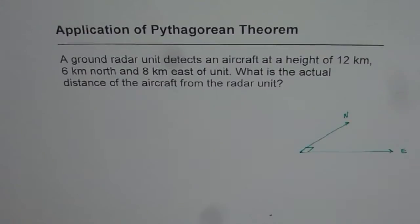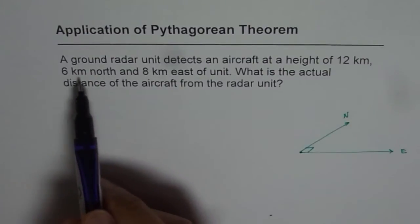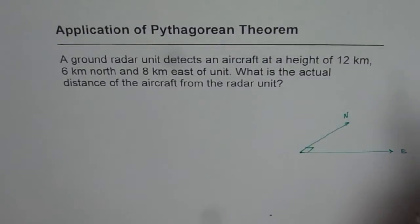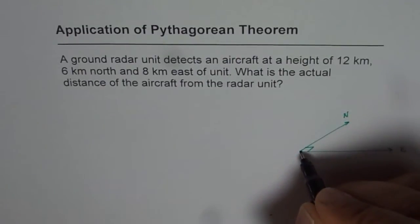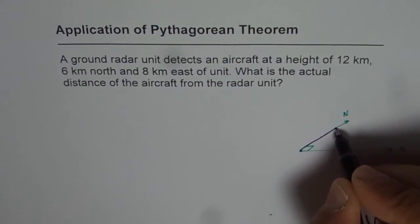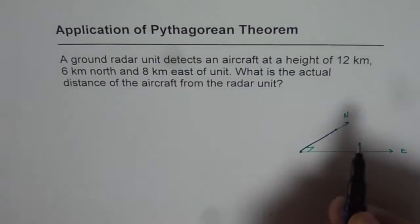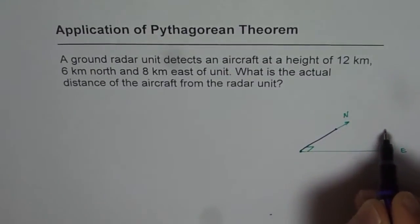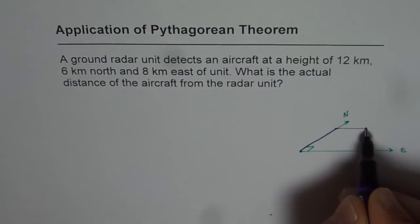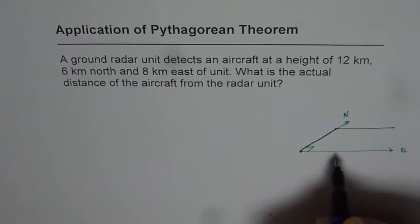Now when we are saying that it is 6 km north and 8 km east, let us say the distance here, this is 6 km and then that is north and 8 km east will be like this, let us say this is 8 km.